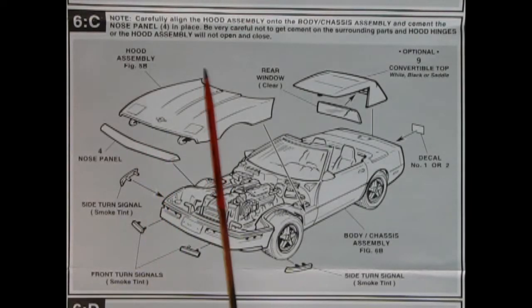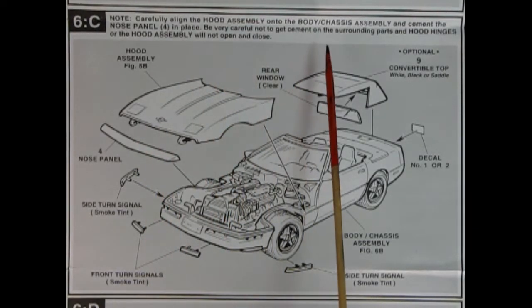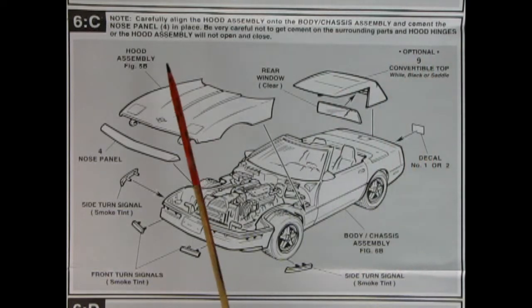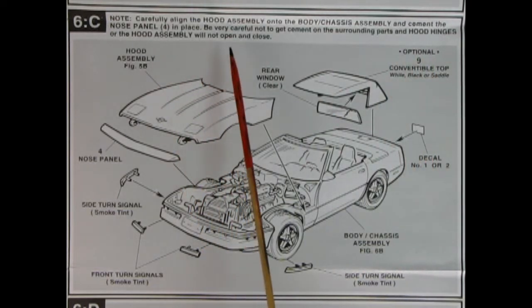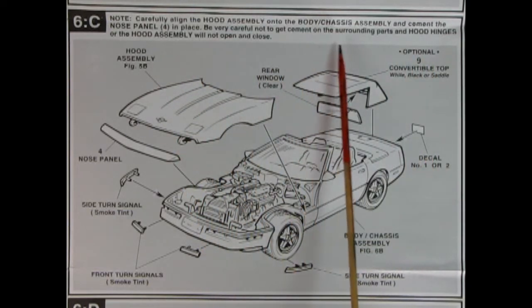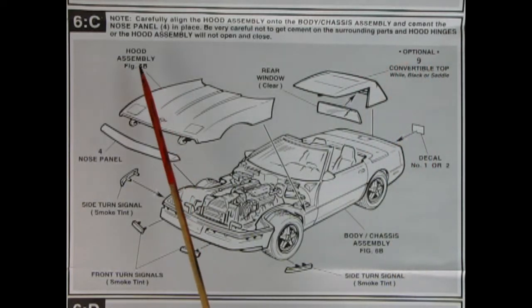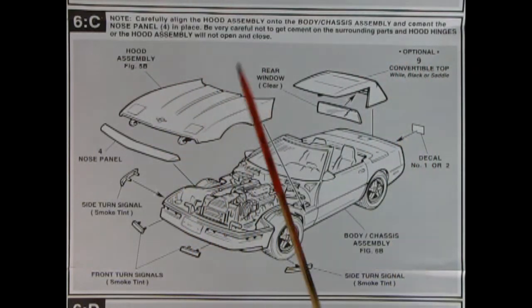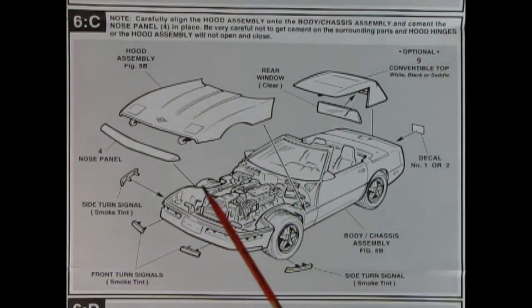Now in panel 6, it says carefully align the hood assembly onto the body chassis assembly and cement the nose panel in place. Be very careful not to get cement on the surrounding parts and hood hinges or the hood assembly will not open and close. Now, I've found this to be a difficult hood assembly, especially on the '86 Corvette. It didn't quite want to line up on one of the sides. So, if you've had that problem, let us know in the comments down below.